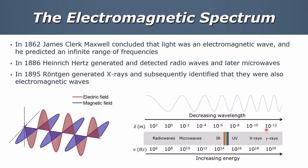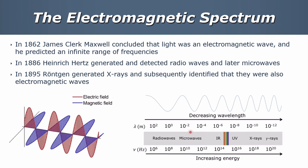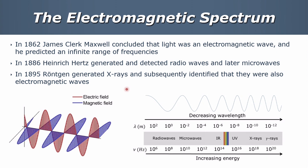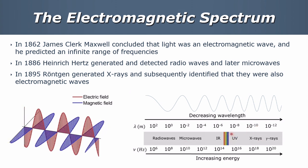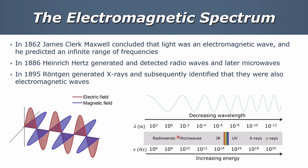Just one slide on the electromagnetic spectrum, going back to 1862 when James Clerk Maxwell concluded that light was an electromagnetic wave and predicted an infinite range of frequencies. Hertz in 1886 generated and detected radio waves, and later microwaves. Although Röntgen discovered x-rays, they were subsequently identified as also part of the electromagnetic spectrum. Here's the spectrum — we have the visible light range, and in increasing energy with much shorter wavelengths we have x-rays and gamma rays, with radio waves at the much longer end.